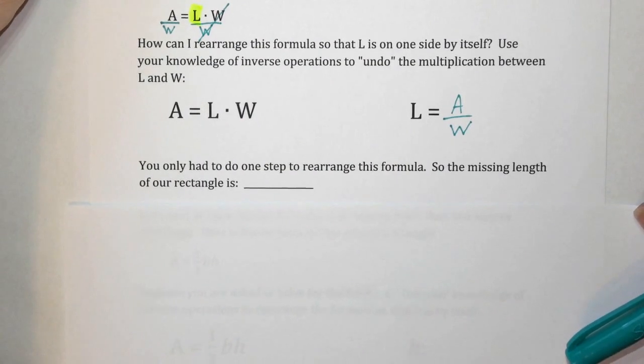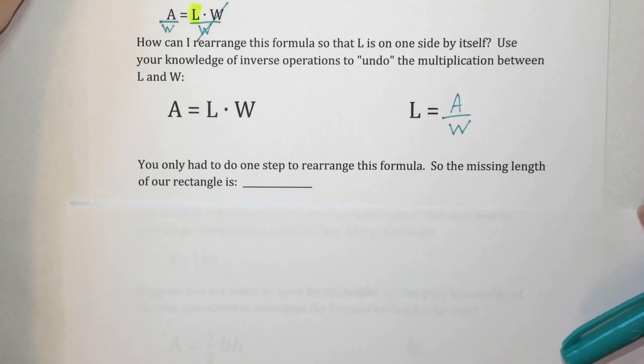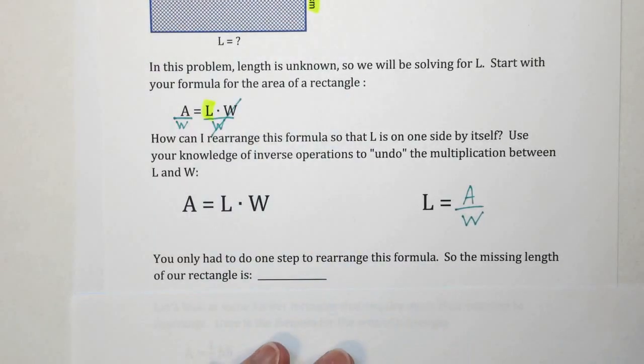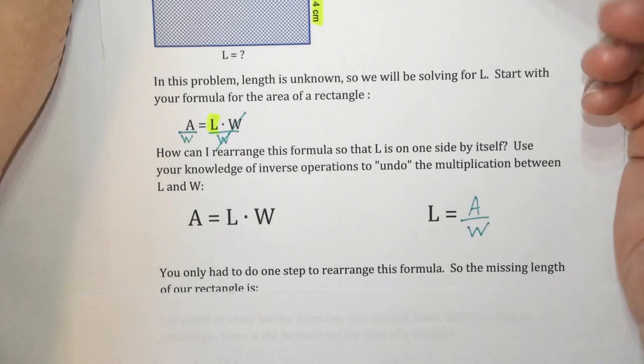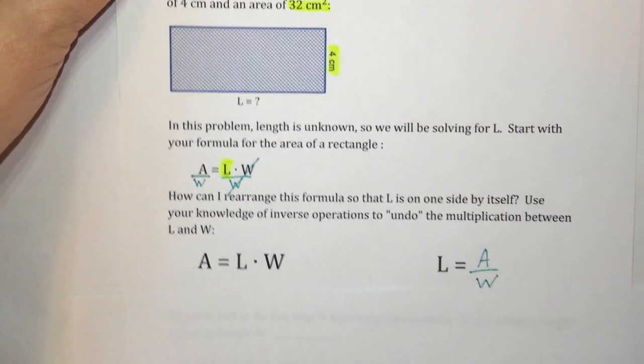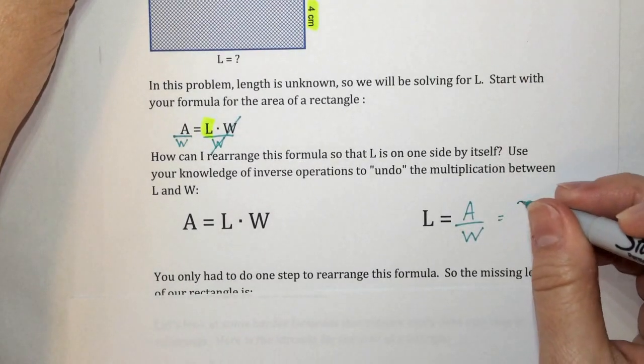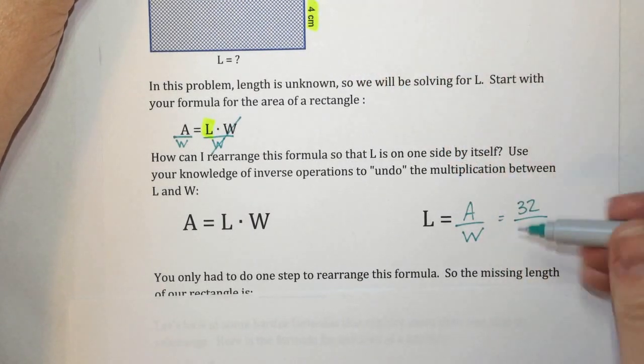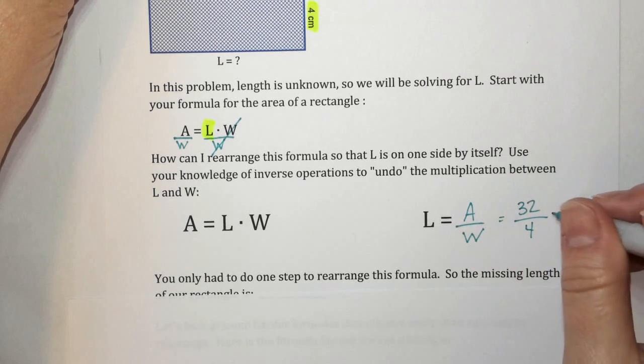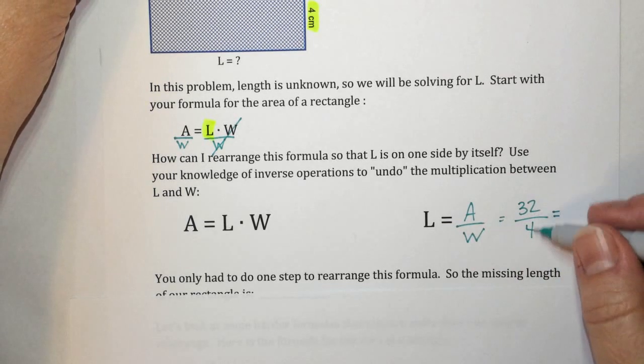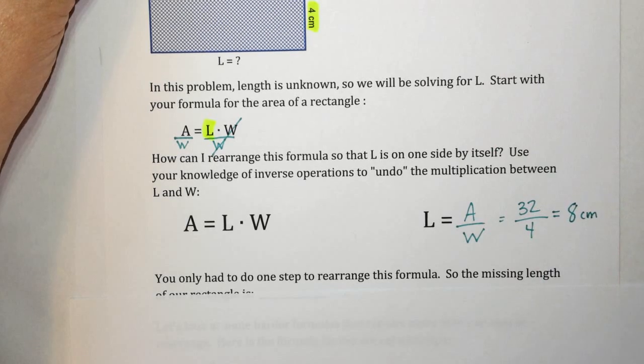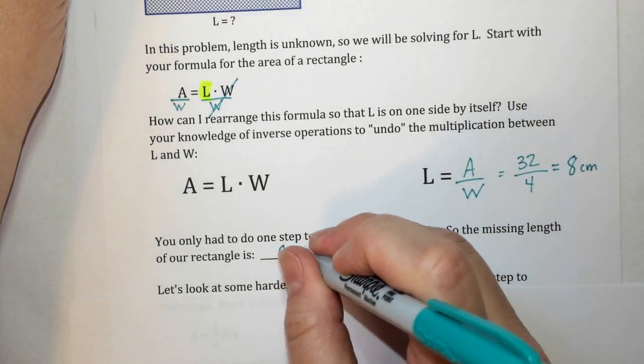Now, you only had to do one step to rearrange this formula. So let's figure out what is the missing length of the rectangle. If I go back up here, I find my area, which is 32. So I put 32 for the A, and what was the width? 4. The length, then, is A divided by W, 32 divided by 4, which is 8, and the unit is centimeters. So 8 centimeters.